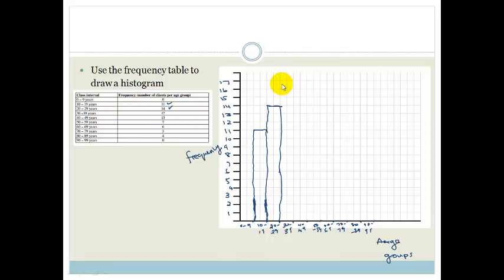Then we got 30 to 39 is 17. So we go up and join these lines. Then we've got 13 which is 40 to 49. So we've got 13. Then we've got 7 which is the 50 to 59 group. Then we've got 6 which is the 60 to 69 group. Then we've got 5 for the 70 to 79 group. We've got 4 for the 80 to 89 which is awesome.